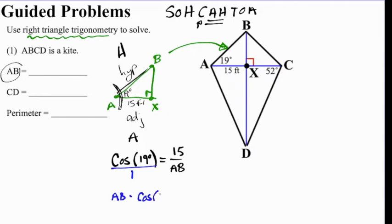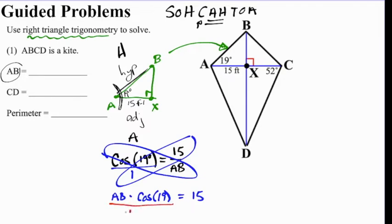Now the strategy we learned was to write this as a proportion and cross multiply. So we have AB times cosine of 19 degrees. That's when we do this cross multiplication. And then 15 times 1, so equals 15. And now we would like to get AB by itself. So we need to get this cosine of 19 degrees away from it. So we're going to divide both sides by cosine of 19 degrees.